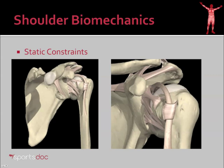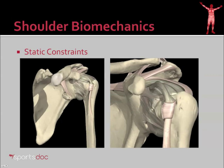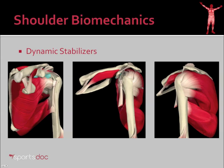These ligaments are called glenohumeral ligaments, and really they are just thickenings of the capsule of the shoulder, which we see in this diagram here. That brings us to the dynamic stabilizers of the shoulder, which is really the topic of this talk today, because the dynamic stabilizers are the rotator cuff muscles.